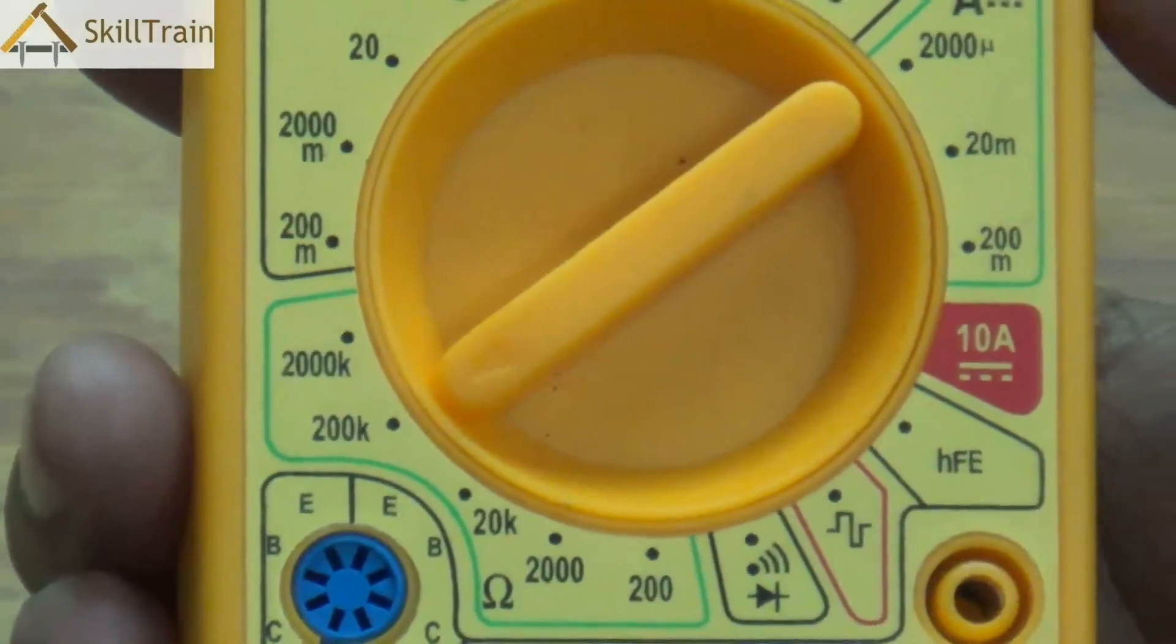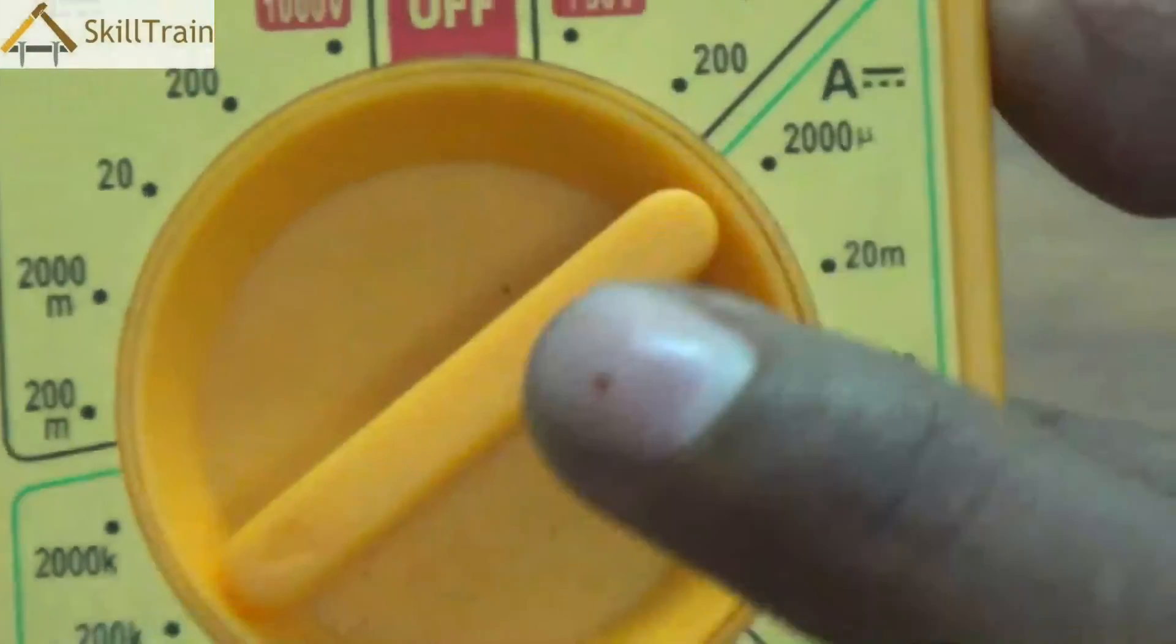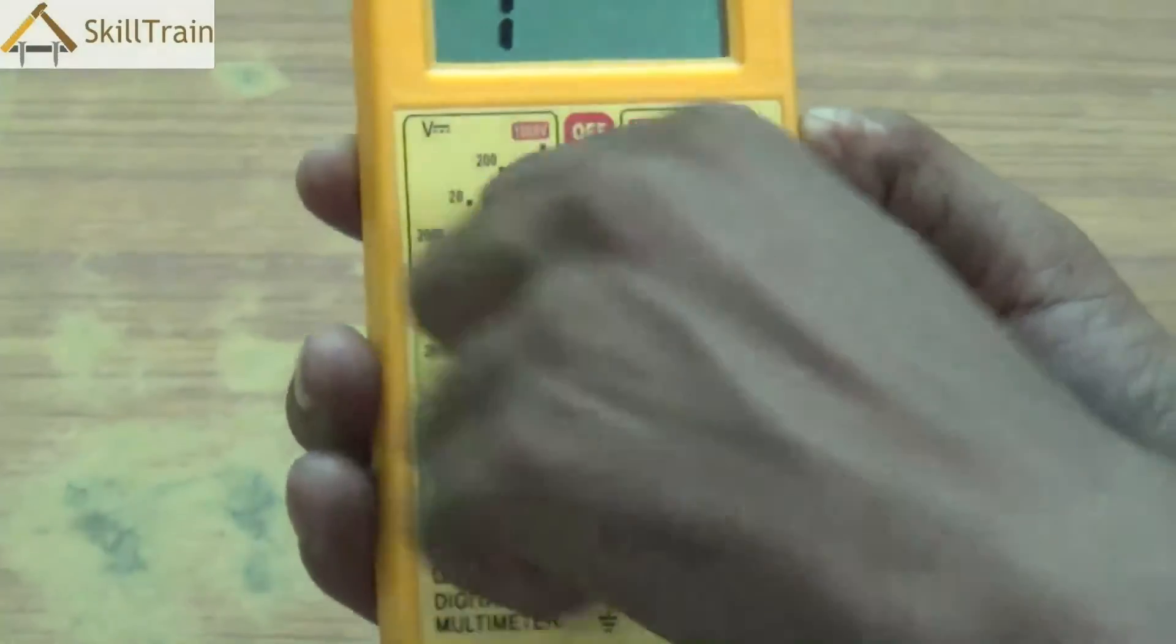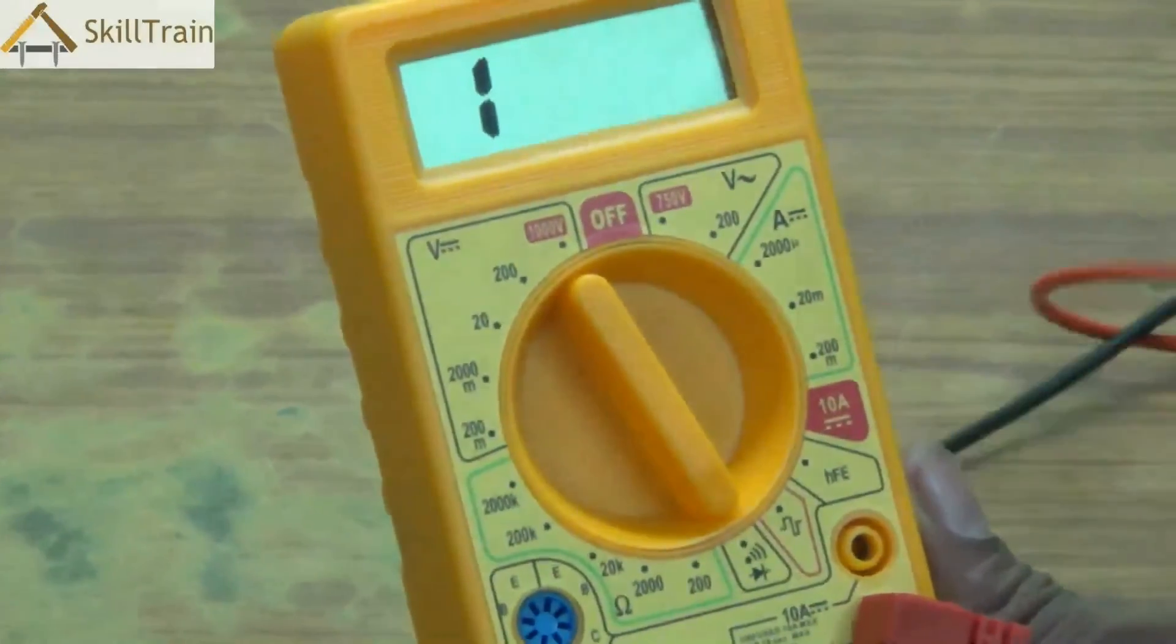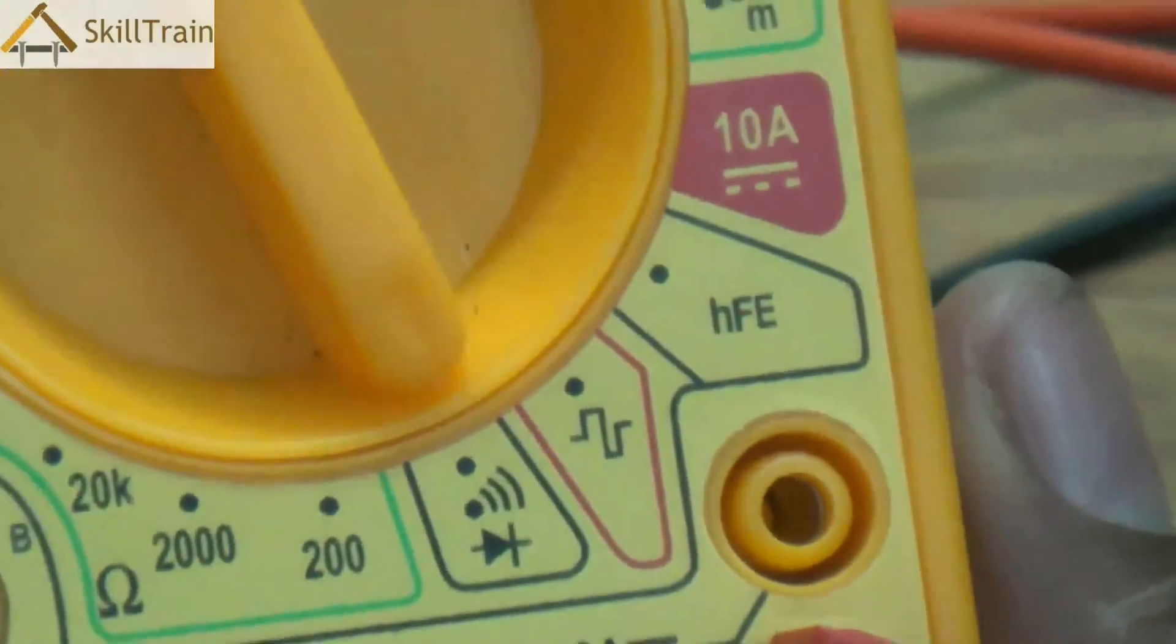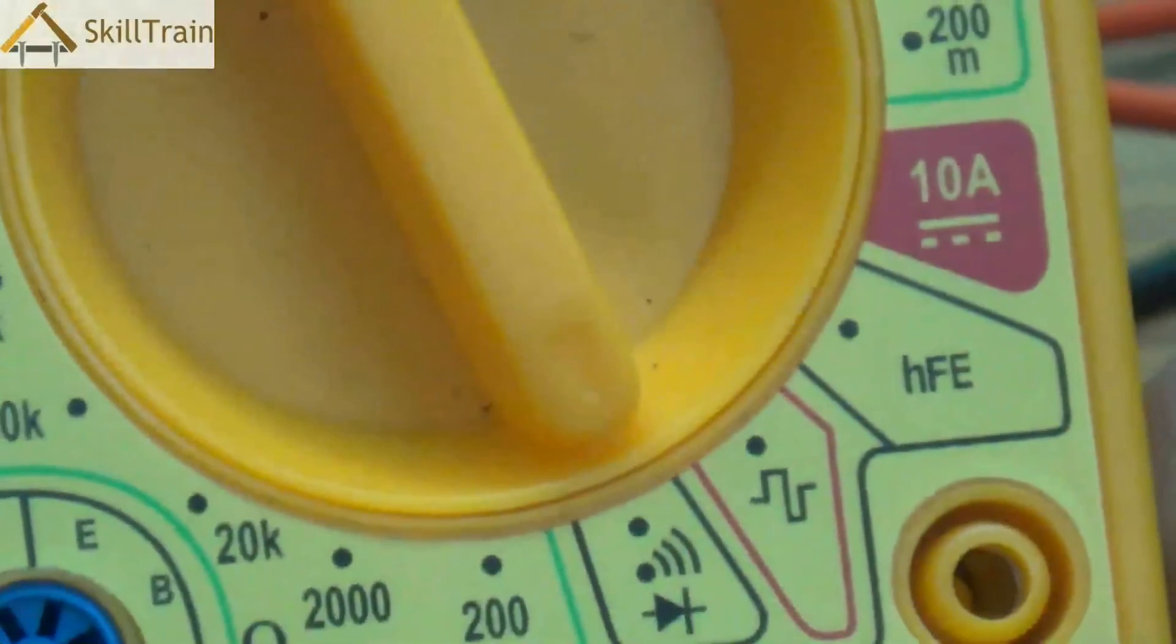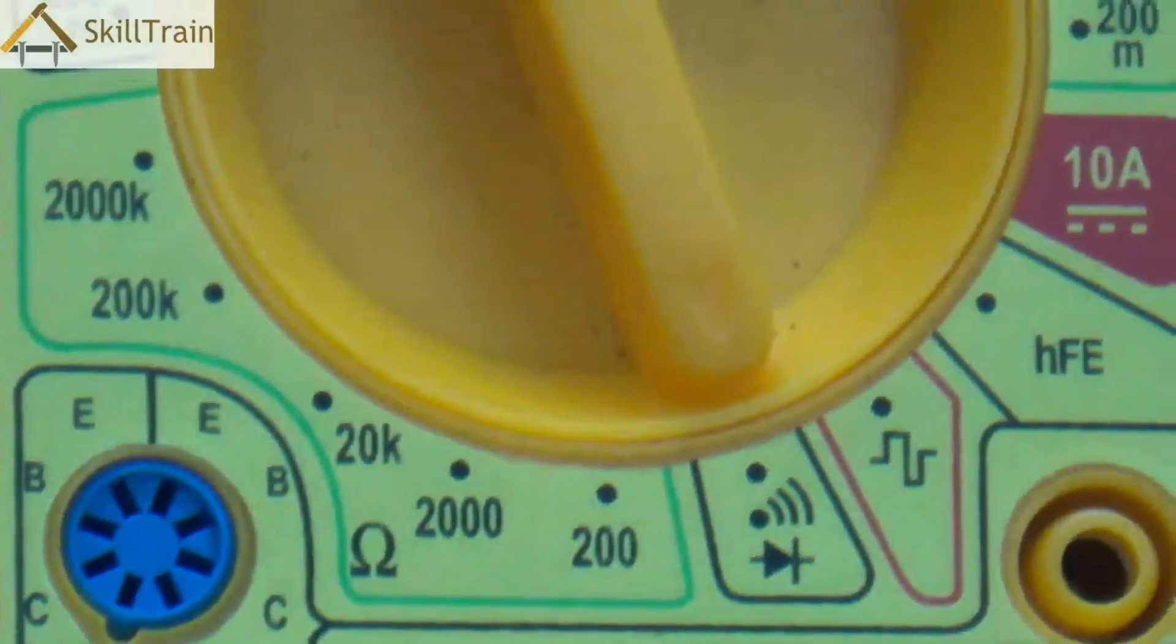The next one that we will understand is where the continuity or beep testing comes. This is an essential test when you are doing tracing or testing of mobile PCBs or any PCB. This point is called the beep or continuity testing. When you place it here and touch the probes together, you will hear a beep sound. The beep sound is very distinct here. But let's try and understand the reason behind this beep sound and why do we use this continuity test.